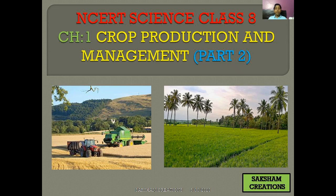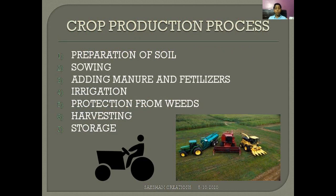Hello everyone, let's continue with science class 8, chapter 1 - Crop Production and Management, part 2. In the last class we studied two crop production processes: preparation of soil and sowing. In today's class we will study the remaining five crop production processes: adding manure and fertilizers, irrigation, protection from weeds, harvesting, and storage.